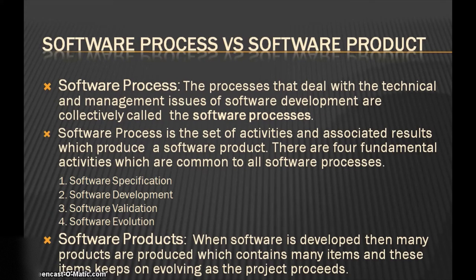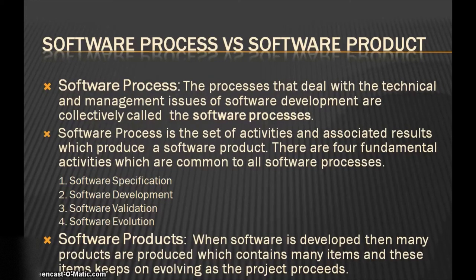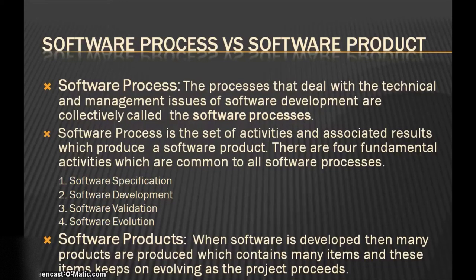Next, we will discuss the difference between software process and software product. A process is a sequence of steps performed for a given purpose to achieve a goal. Multiple processes are required for the development of software. Software process is the set of activities and associated results that produce a software product. There are four fundamental activities common to all software processes. First is software specification, which means the functionality of software and constraints on its operations must be defined. Second is software development.